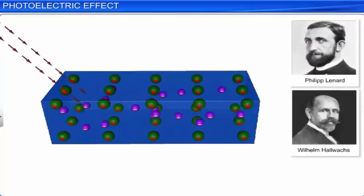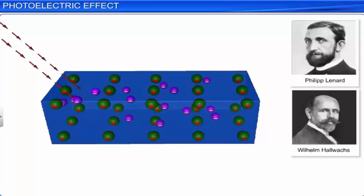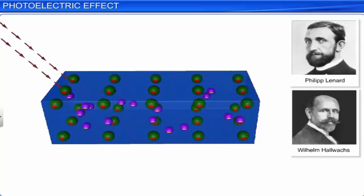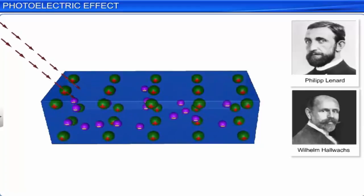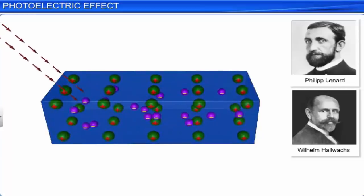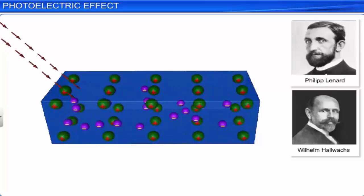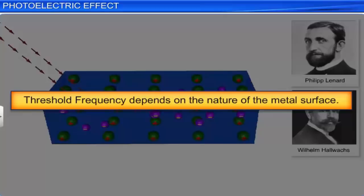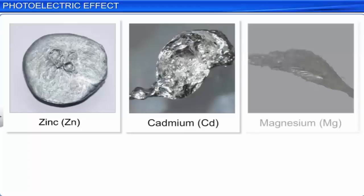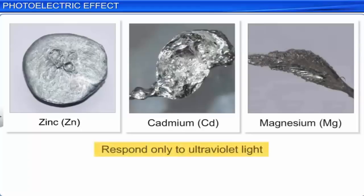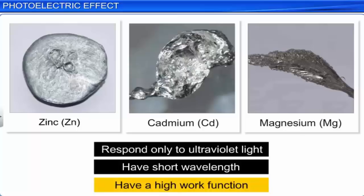Hallwachs and Lenard also observed that no electrons were emitted by the surface when the frequency of light was less than a certain minimum value. This minimum frequency of incident light, below which no photoelectrons are liberated from the metal surface, is known as the threshold frequency, or work function. Threshold frequency depends on the nature of the metal surface. Certain metals, such as zinc, cadmium, and magnesium, respond only to ultraviolet light, as they have short wavelength and a high work function.